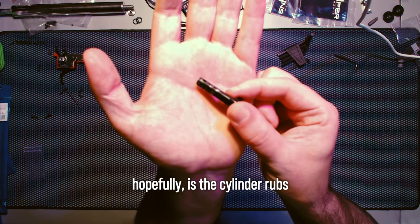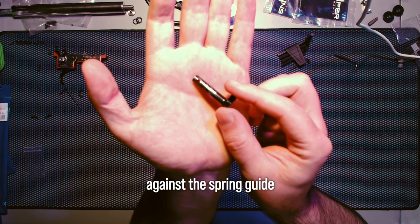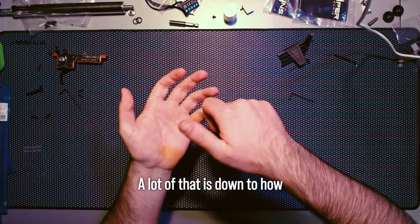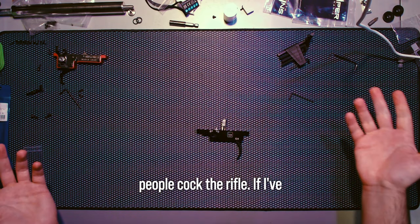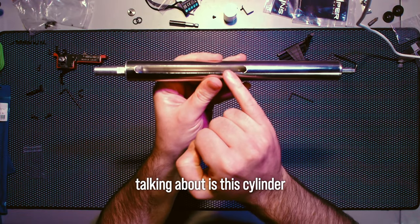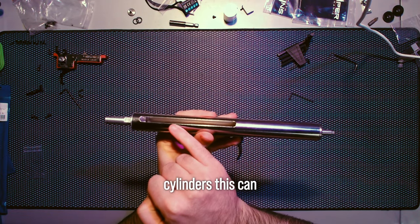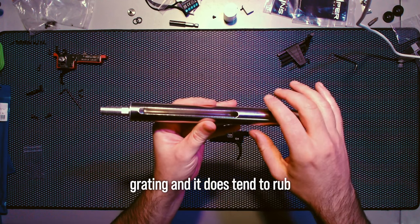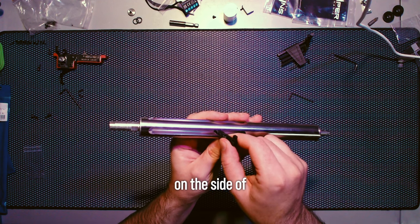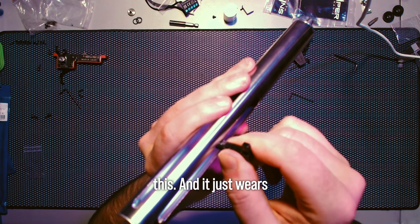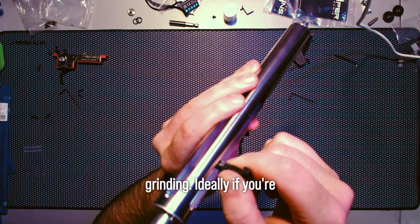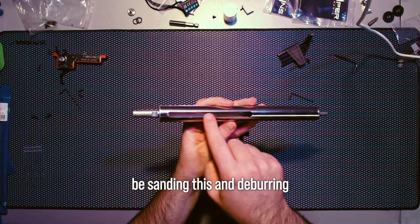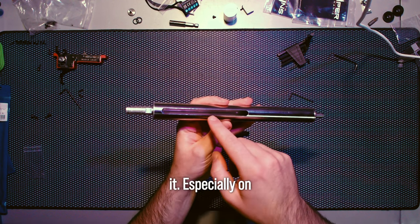You'll see it on this maple leaf one - the cylinder rubs against the spring guide stopper and you end up with grating. A lot of that is down to how people cock the rifle. This cylinder cutout on some cylinders can be very sharp and it does tend to rub on the side and wears away.